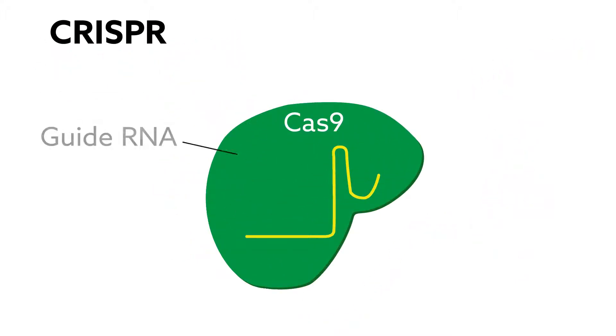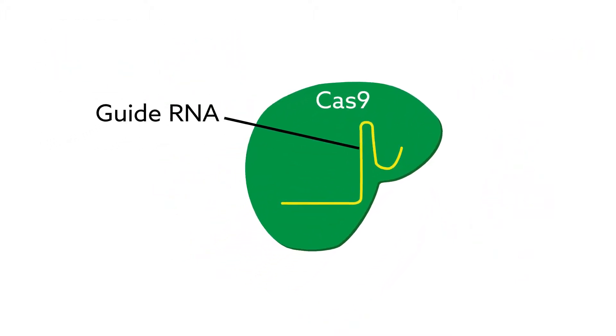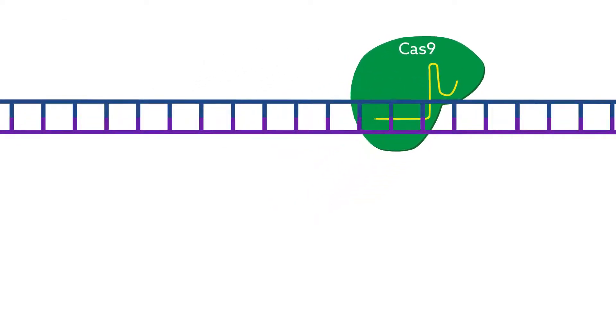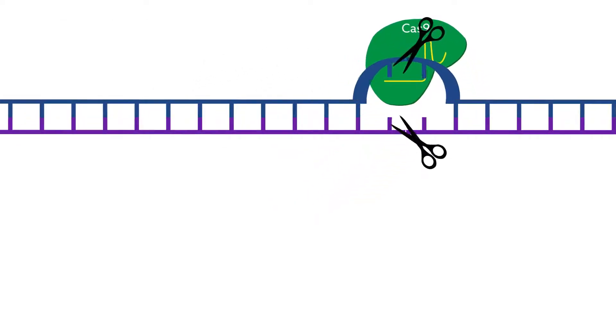CRISPR-based editing uses a guide RNA to direct the Cas9 endonuclease to a specific spot in the genome and make a cut in the DNA.